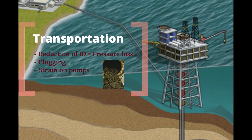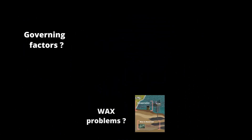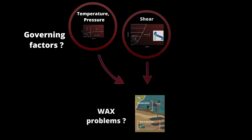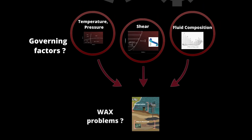Also, it would require high restart pressure for gelled oil in the pipeline after production stop. The governing factors for wax deposition are well known. The key parameters are the temperature, the shear rate, and the fluid composition. Temperature is, of course, the dominant factor.